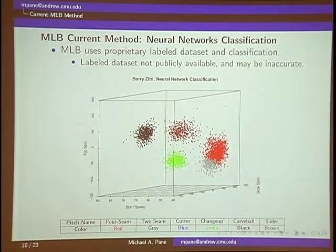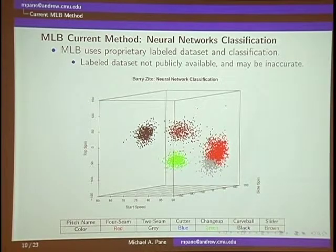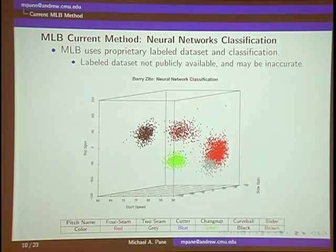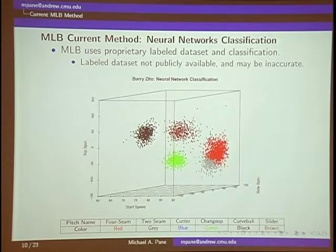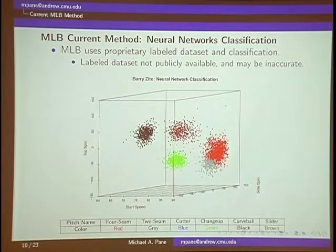There actually is a really good current method run by Brooks Baseball — they actually manually label every single pitch. Every single day they go in and look at the PitchFX data and manually label every pitch. That's a whole lot of work. They'll look at high-resolution pictures of a pitcher's grip to try to see whether it's a curveball or a slider, and they'll also talk to a pitcher to ask what he just threw. Our whole goal here is to automate that whole process and hopefully do as well as Brooks Baseball does, just saving a lot of time.